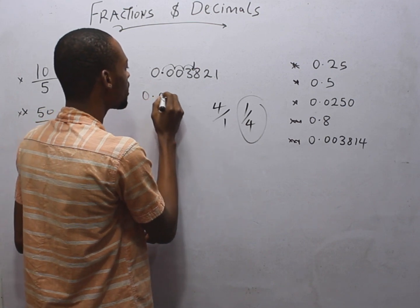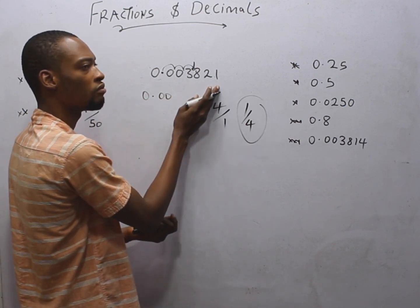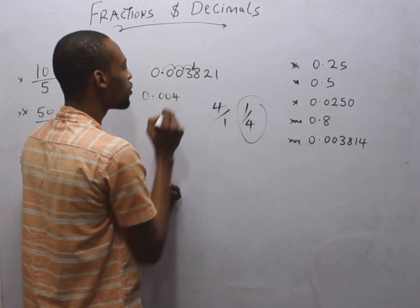This is not more than 4, so it doesn't matter. We simply say this is 0.004. Since the next number is more than 4, we approximate. So we round off. This becomes 4.